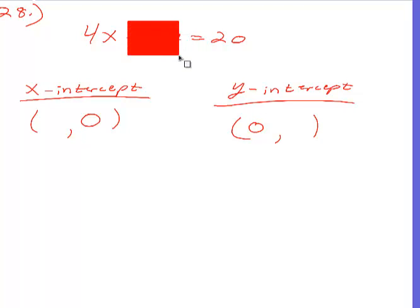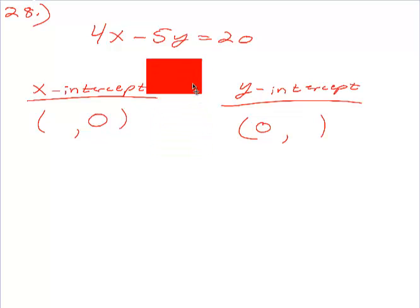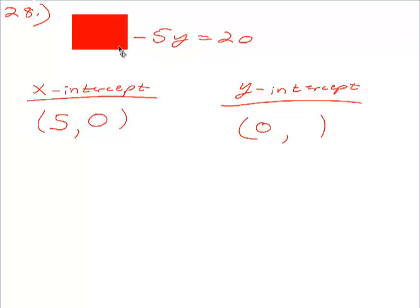For the X-intercept, the Y-term goes away. So what do I have to do to get X by itself? What's 20 divided by 4? 5. Everybody good? For the Y-intercept, what do I put in for X? 0. So I cover it up. What do I do to get Y by itself? Divide 20 by negative 5. What do you get? Negative 4. Everybody good with X and Y-intercepts now?